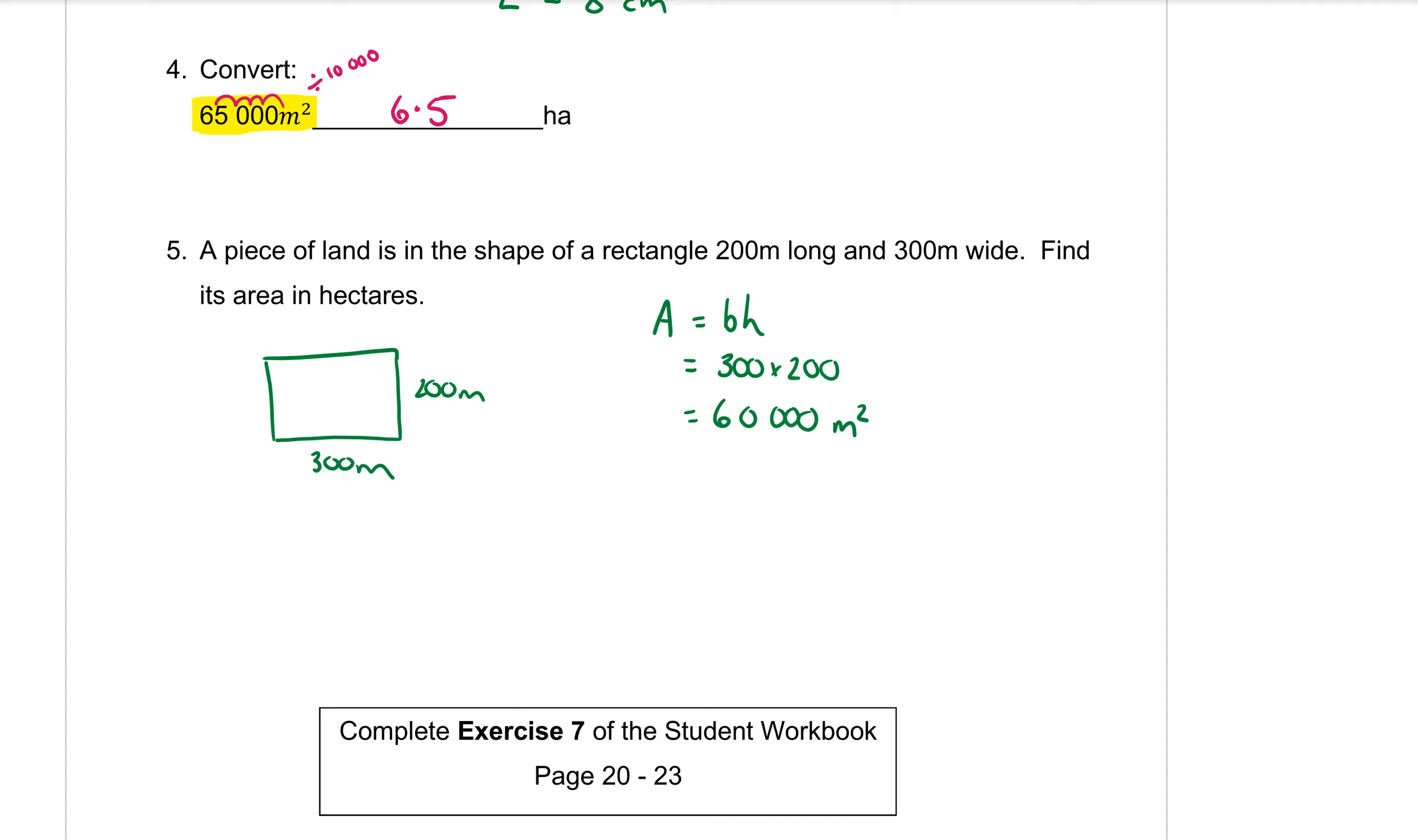The only difference with this question is that I need to be able to get my answer in hectares. So like what I was doing in question four to go from meters squared to hectares I need to divide that by 10,000. So if I divide by 10,000 which means I imagine this decimal point jumping back four places that will make 6.0 or just 6 hectares. HA remember is the symbol for hectares.